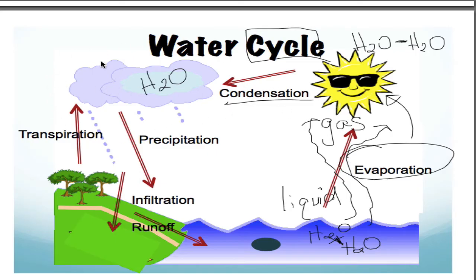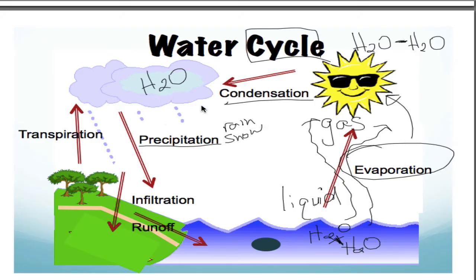Moving on — now we've got all this water in this nice big cloud. Eventually what's going to happen is that there's going to be so much condensed water in these clouds it's going to be really, really heavy. We go from this cloud and we're going to have precipitation. Precipitation could be rain or — here in Minnesota — probably snow. That water is going to become so heavy that it's going to fall to the earth. The big player in precipitation is gravity. Gravity is going to pull on that water in the atmosphere and pull it down to the ground.